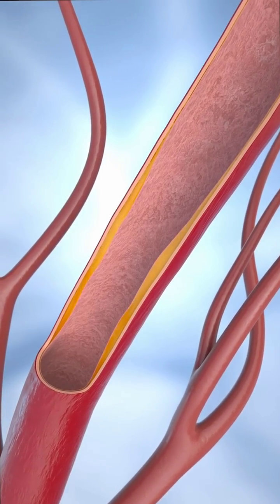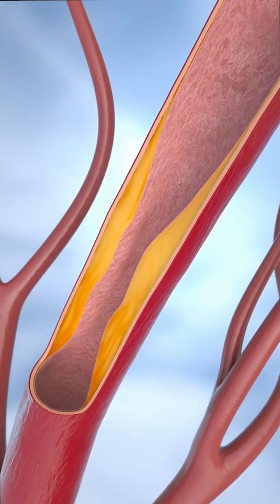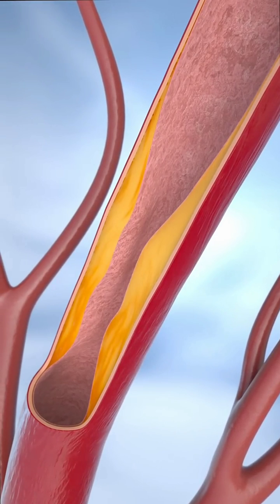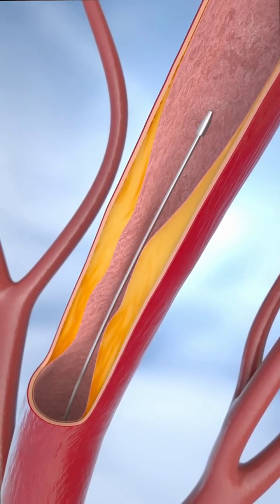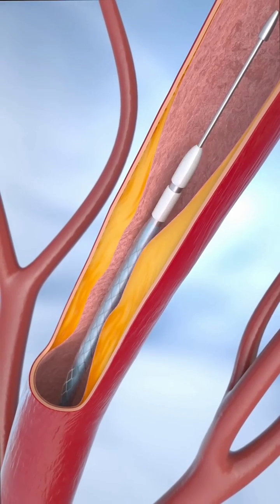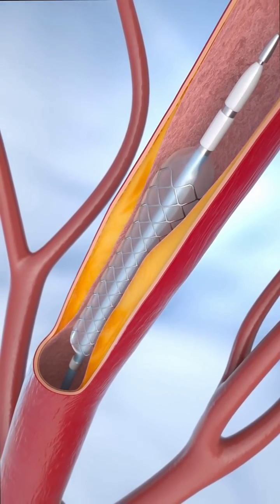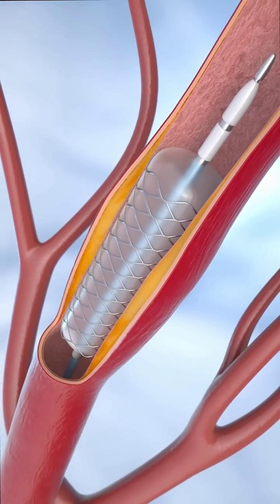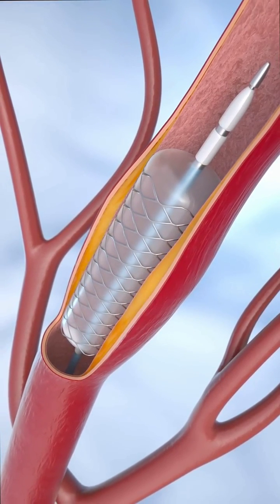Coronary angioplasty is a procedure to open clogged blood vessels of the heart. Coronary angioplasty treats vessels called coronary arteries, which deliver blood to heart muscles. A tiny balloon on a narrow tube, called a catheter, is used to widen a clogged artery and improve blood flow.